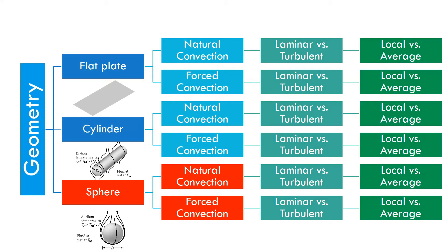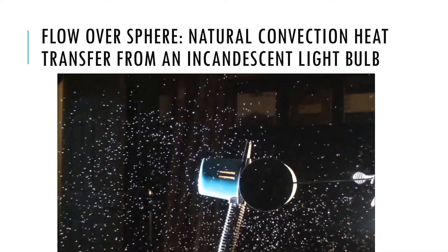After flat plate and cylinder, we turn to sphere. That's another common geometry that a lot of real geometries can be approximated to, which is why we study these shapes. We're going to talk about both natural convection and forced convection over a sphere.